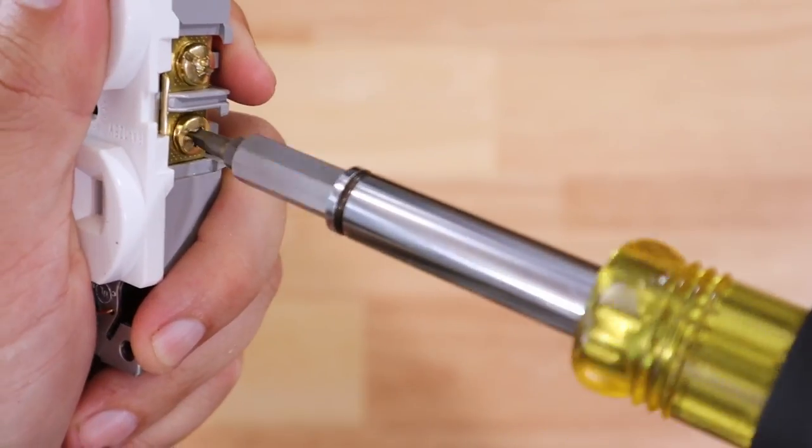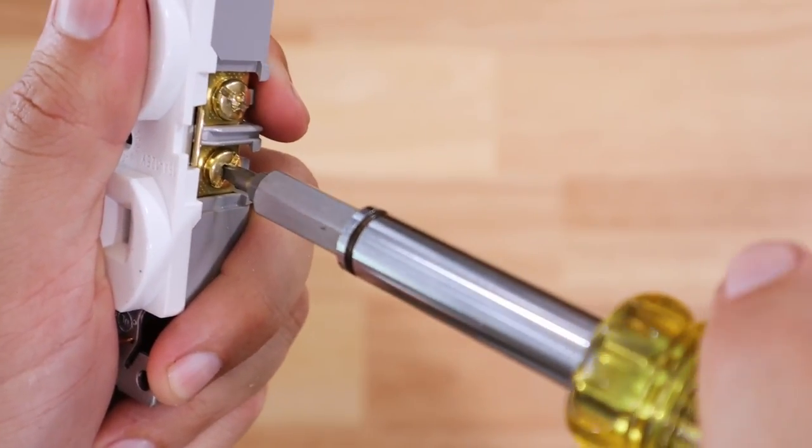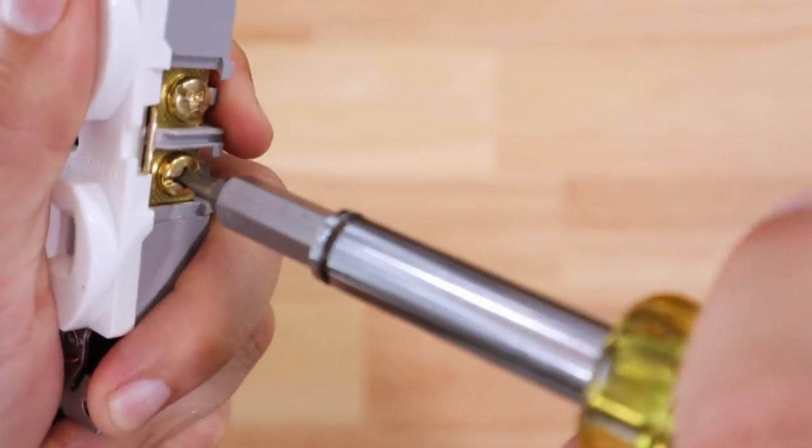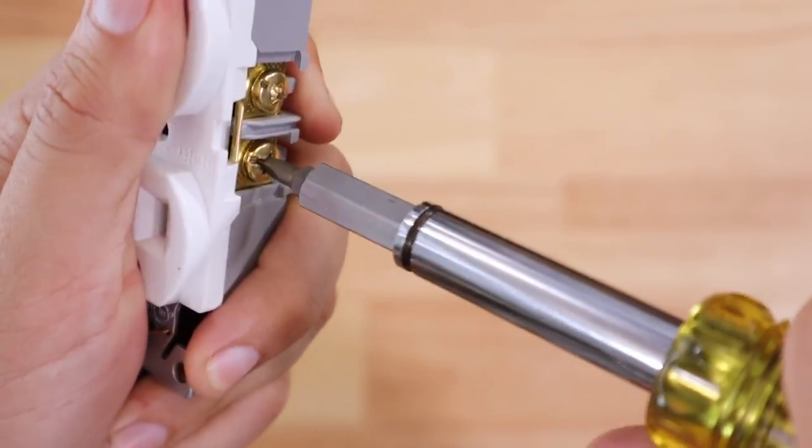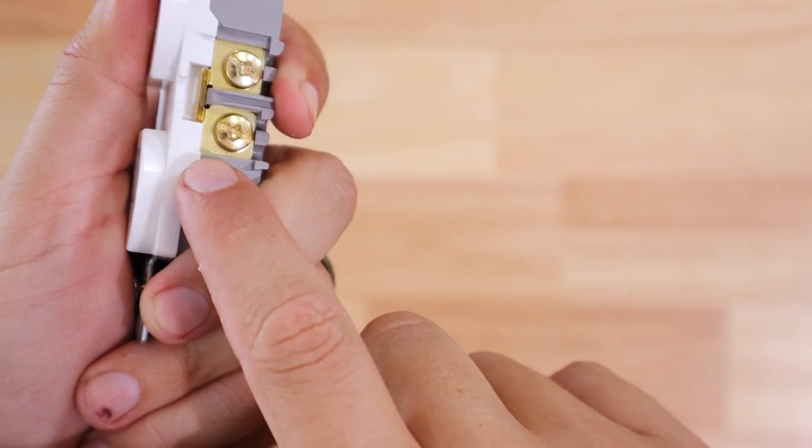So that when you go to tighten it down, you get to where it's giving resistance, you can continue turning it and really tightening and torquing down that terminal head to make a really good connection.